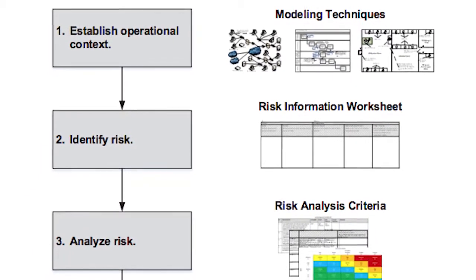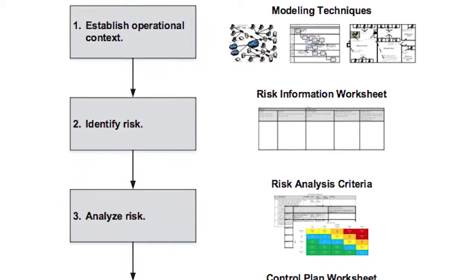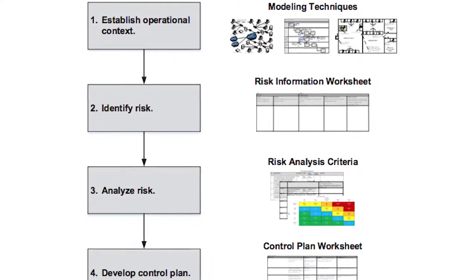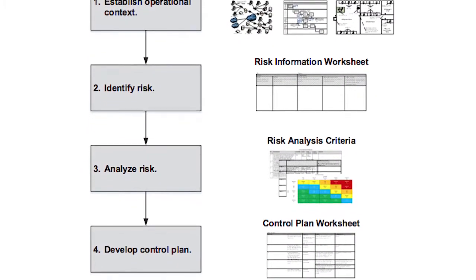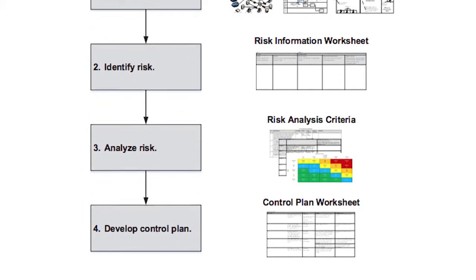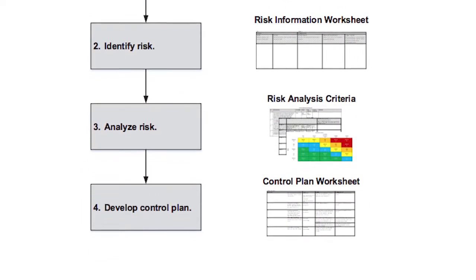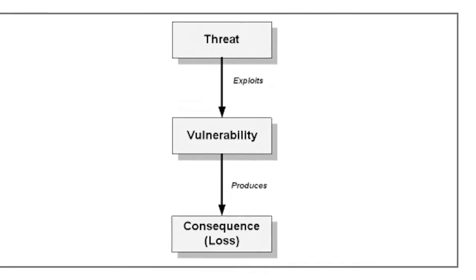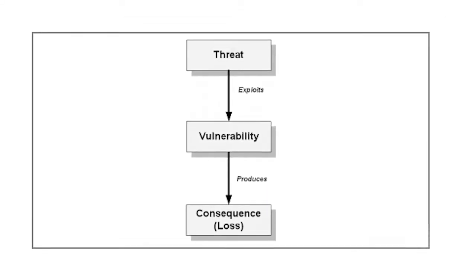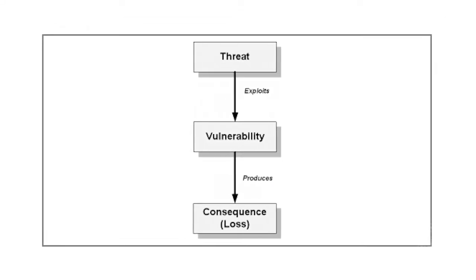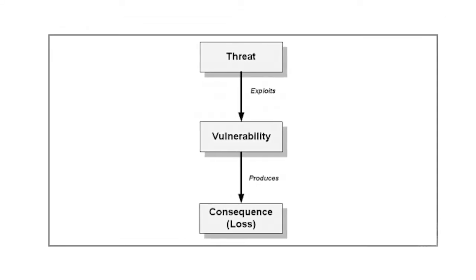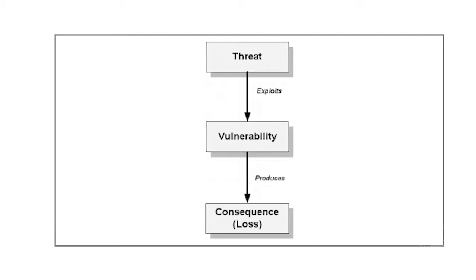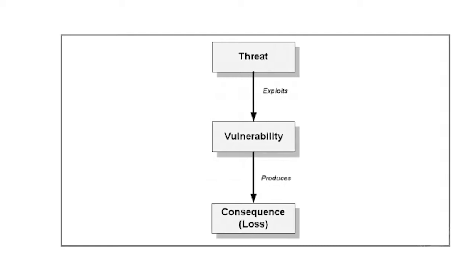The CIRA method incorporates a variety of models that can be analyzed at any point in the life cycle to identify security risk scenarios. Those scenarios are then used to focus an organization's limited resources on controlling the most significant security risks.